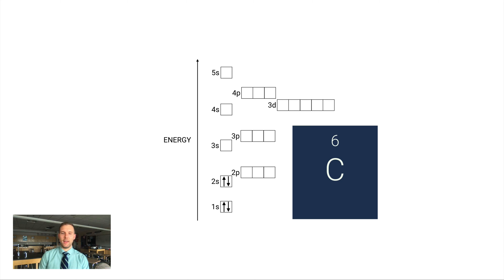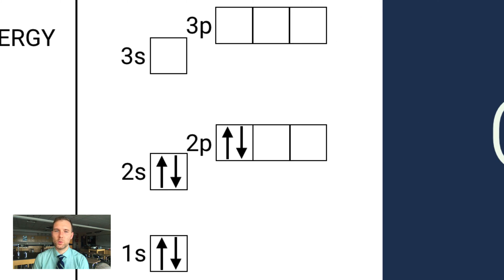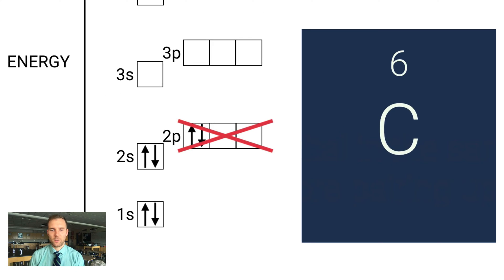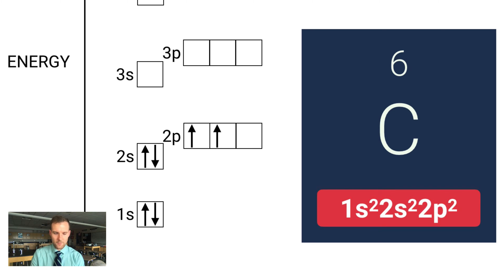Carbon has six electrons: 1s² 2s² 2p². But the two 2p electrons don't both go into the same orbital. Imagine getting on a bus — you'd take an open seat before sitting next to someone already seated. This is Hund's rule: single electrons will fill each orbital in the same subshell on their own before pairing up. So carbon's two 2p electrons go into separate orbitals, spinning in the same direction.